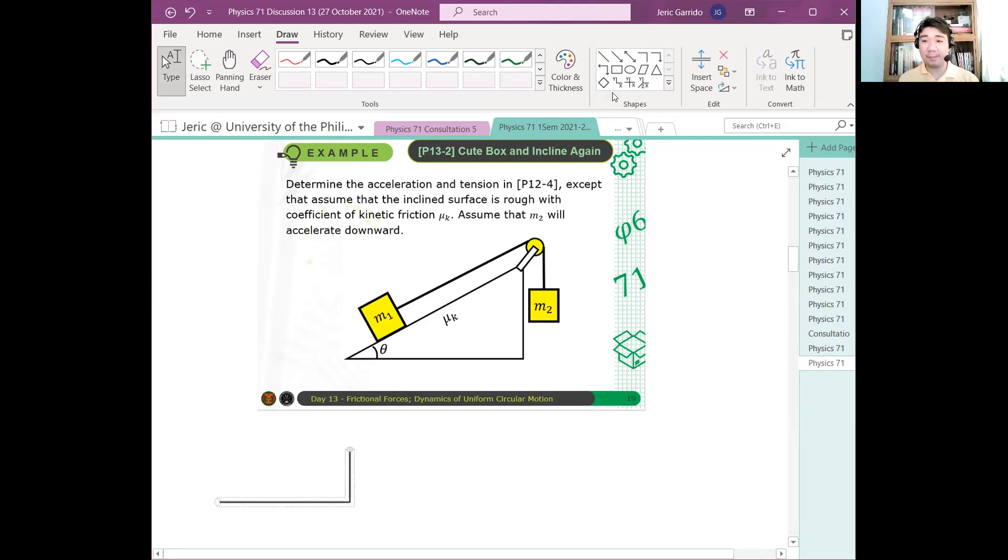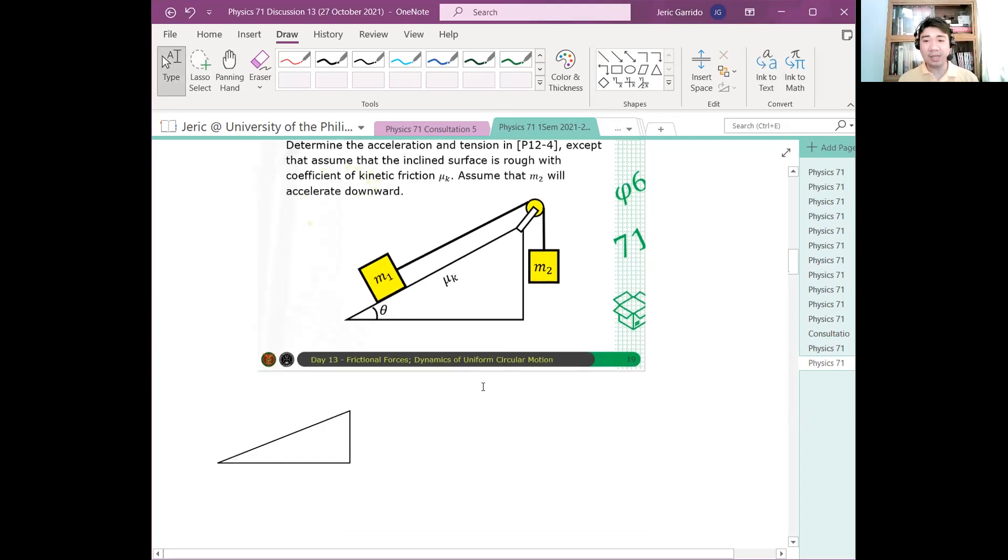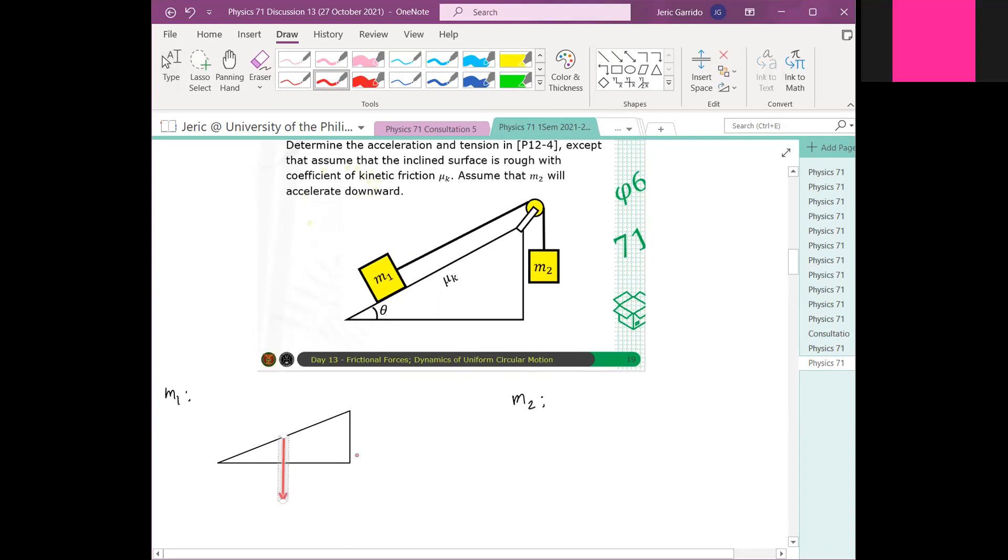So ganyan. Ganyan yung tura niya, di ba? Tapos, siyempre, triangle dapat yan. Okay, ganyan. Now, what are the forces? This is the free body diagram of M1. And this is for the free body diagram of M1, which is much easier. The question now is what are the forces acting on M1? Ano yung mga forces na nag-a-act kay M1? Weight. Weight, of course, which is what? In what direction? This should be downward. Downward.